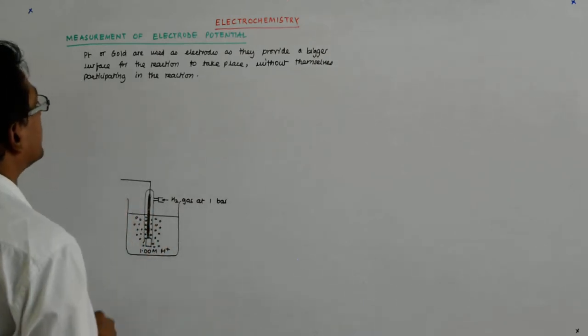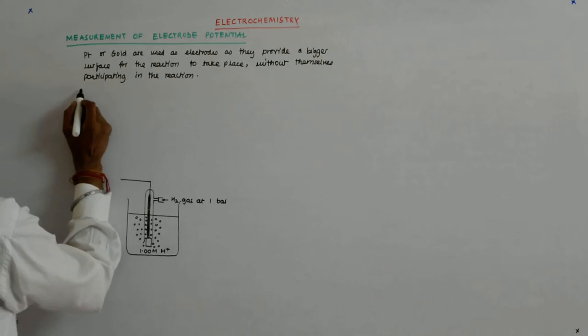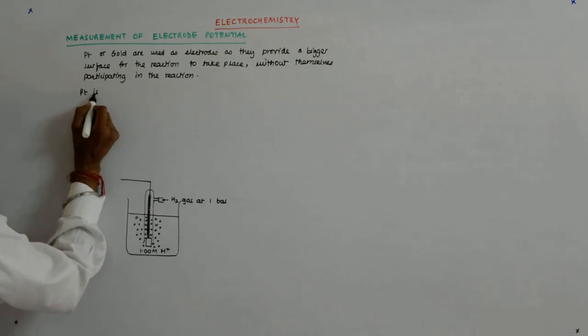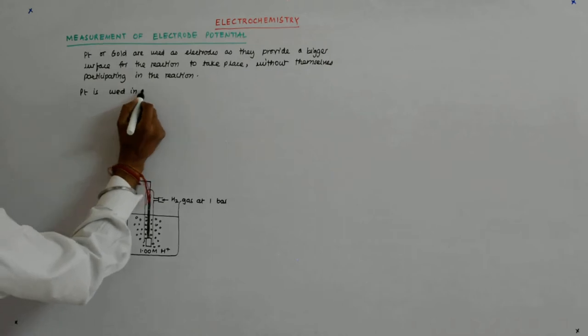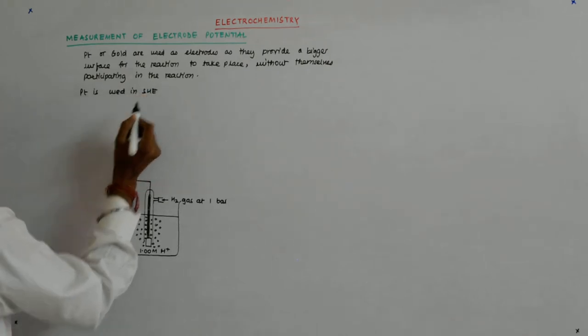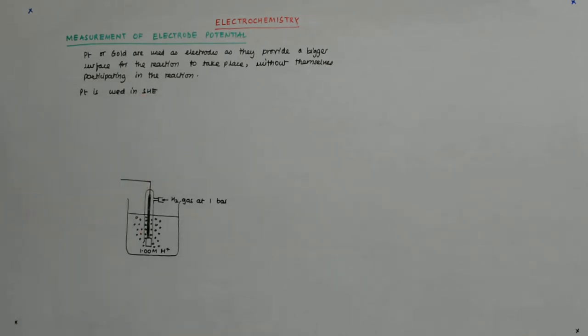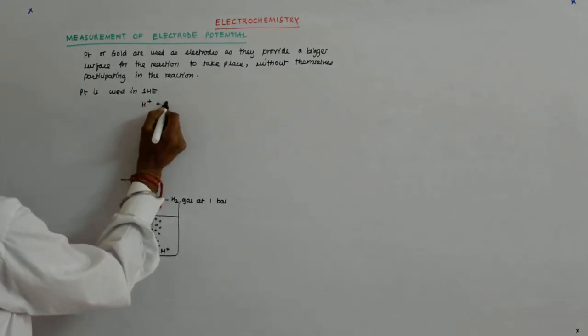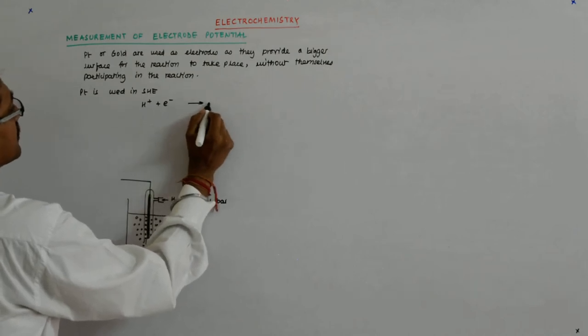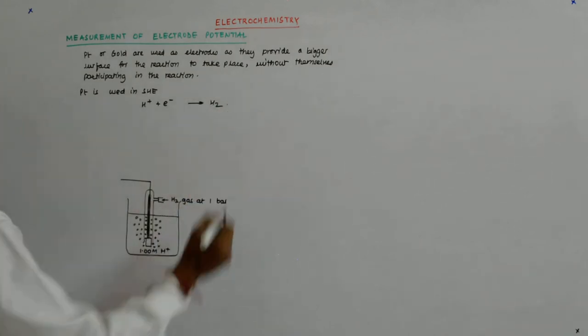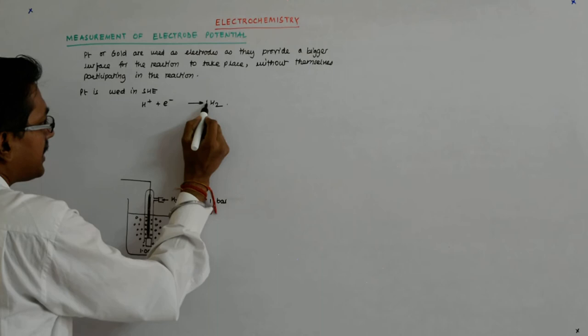So platinum is used in standard hydrogen electrode, and the reaction is what we already know to be this.